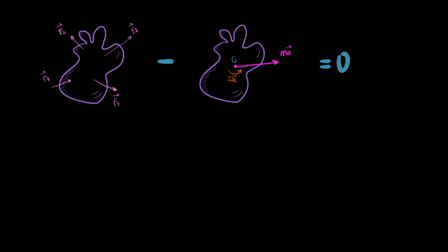Now we can go ahead and draw the same body and include all the external forces again, but also include the negative of the resultant force and the negative of the inertial torque. We can add all that up and it will all equal zero.